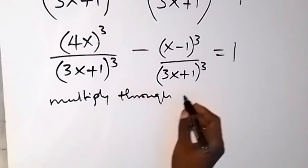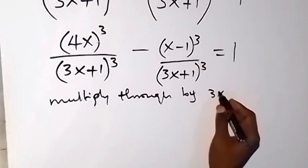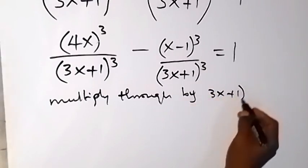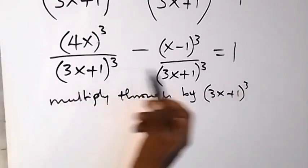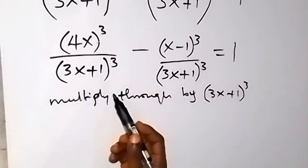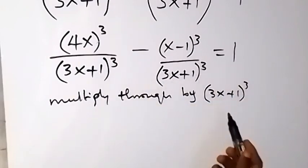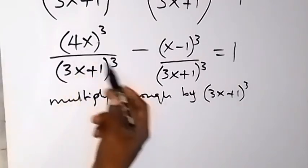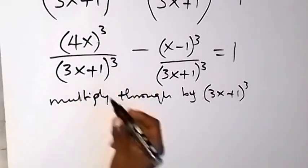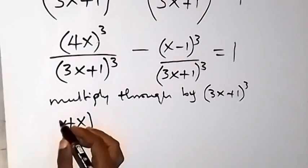We multiply through by the LCM, which is (3x+1)³. We have three fractions, so we multiply both sides by (3x+1)³. When we multiply the first fraction by that, it cancels, and we remain with (4x)³.